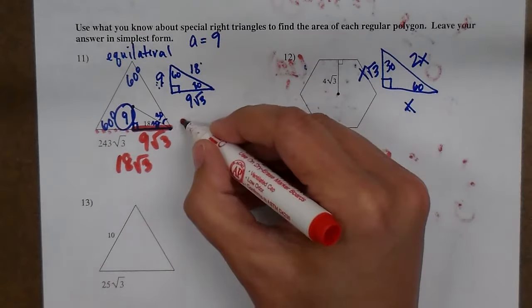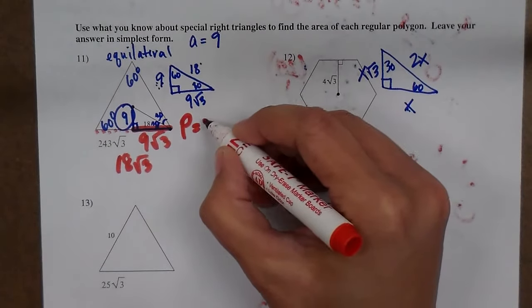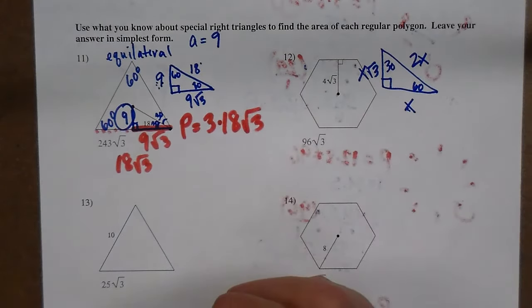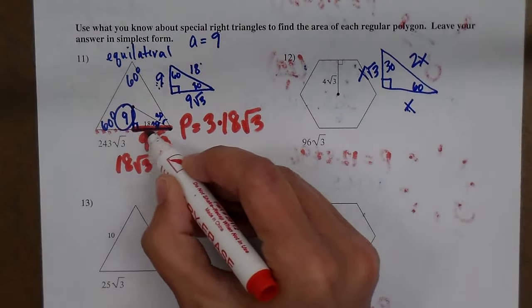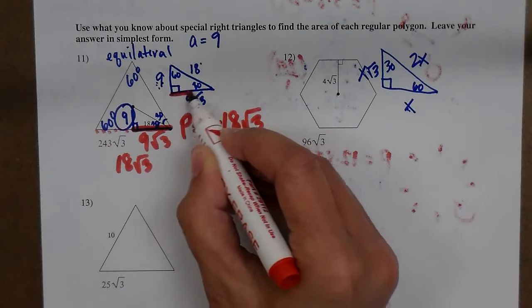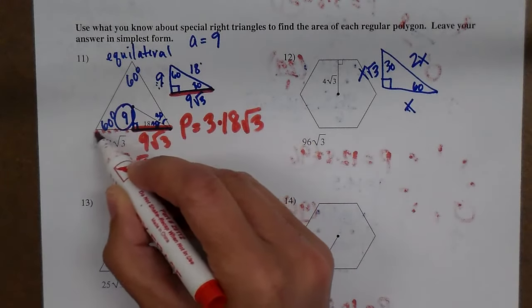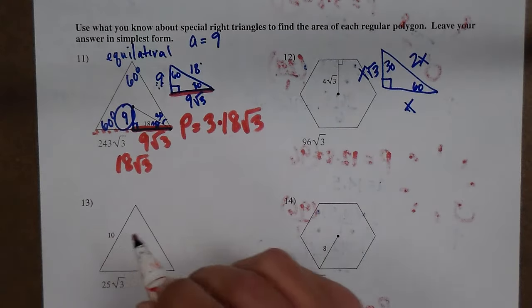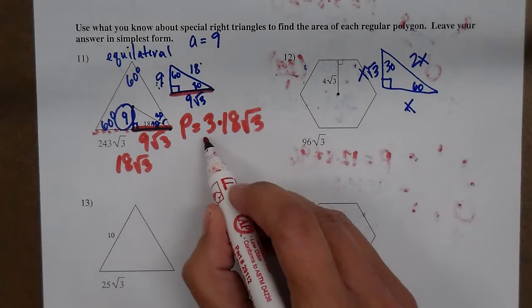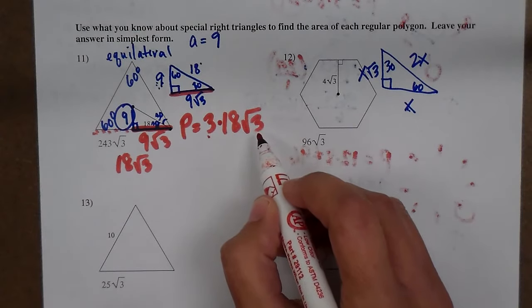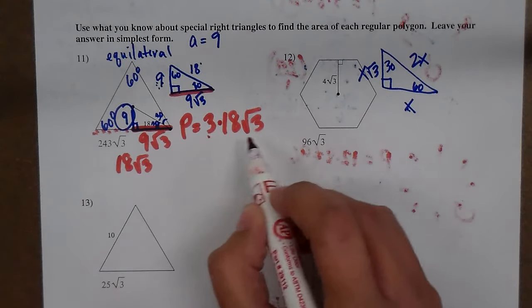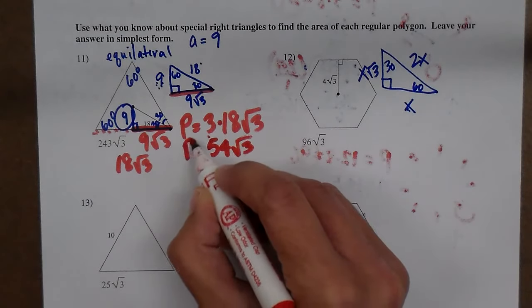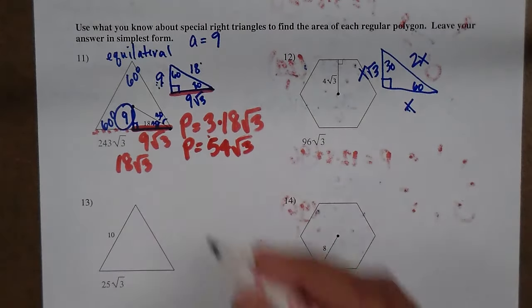How do I find the perimeter of my triangle? It's going to be 3 sides at 18 square root of 3 apiece. I can only multiply the 3 and the 18 together because the other 3 is under the radical. So my perimeter is 54 square roots of 3.